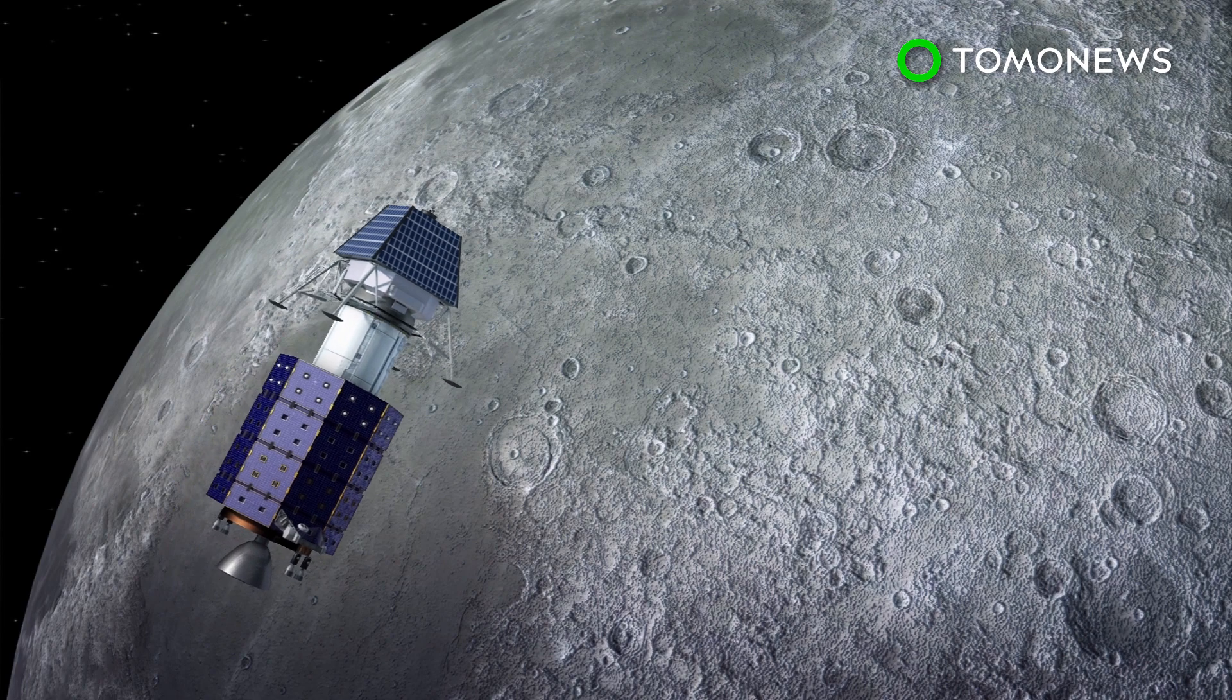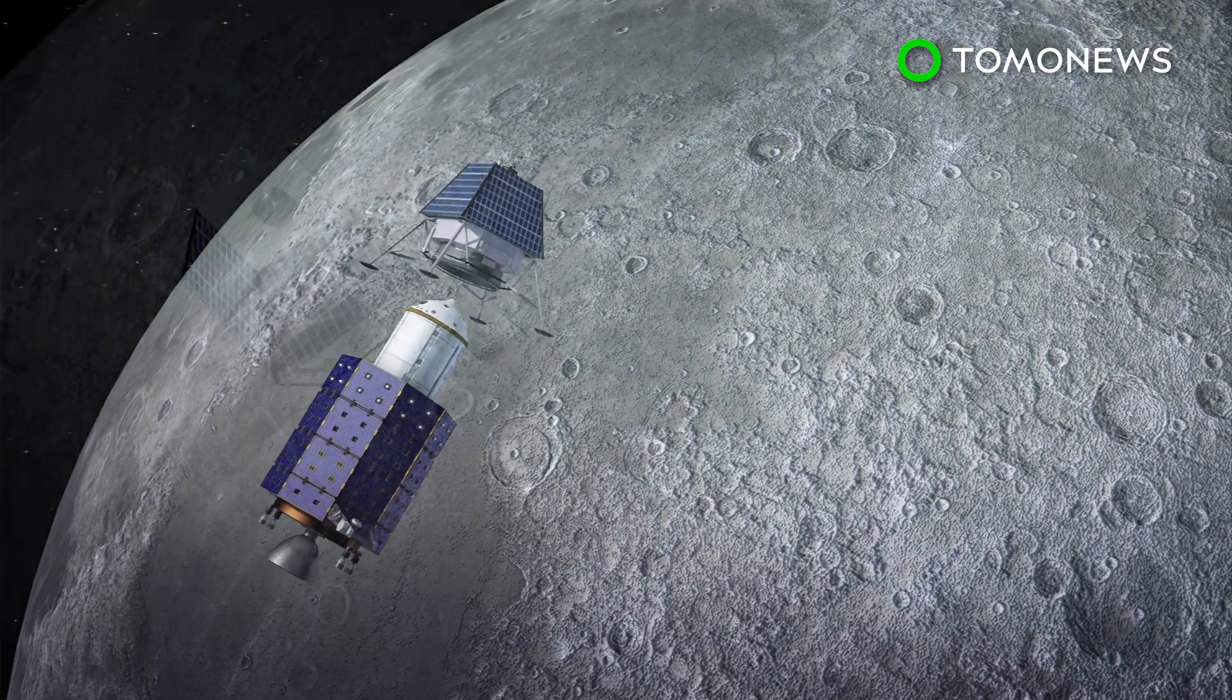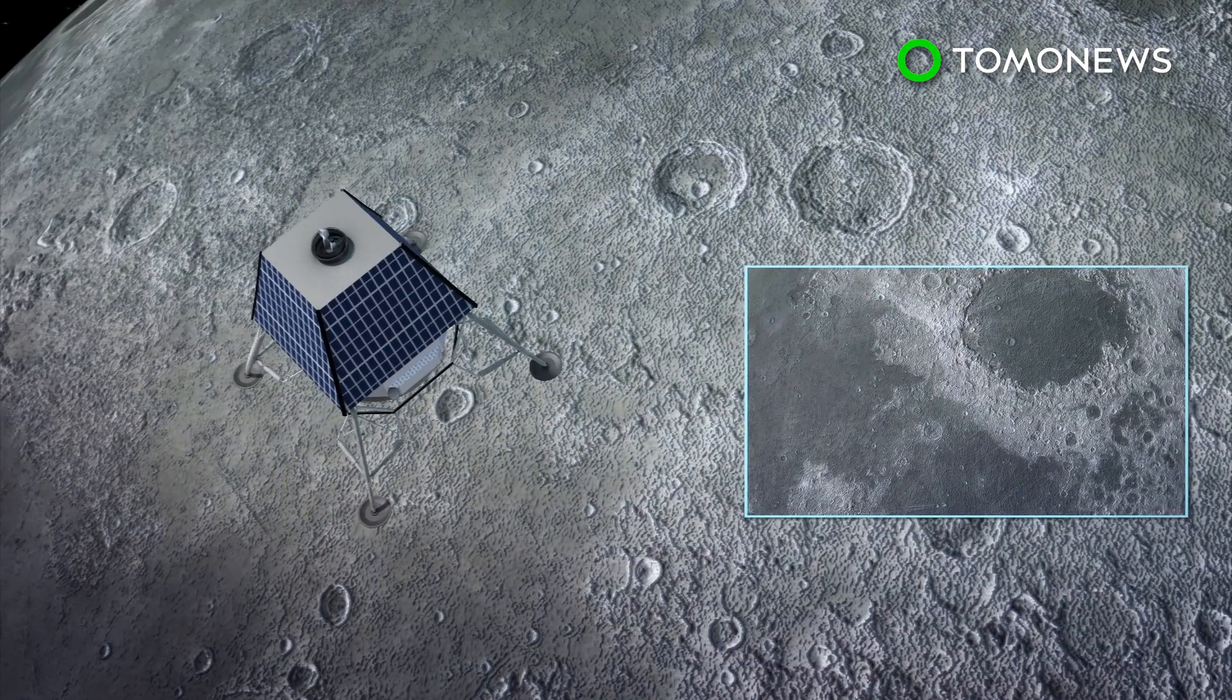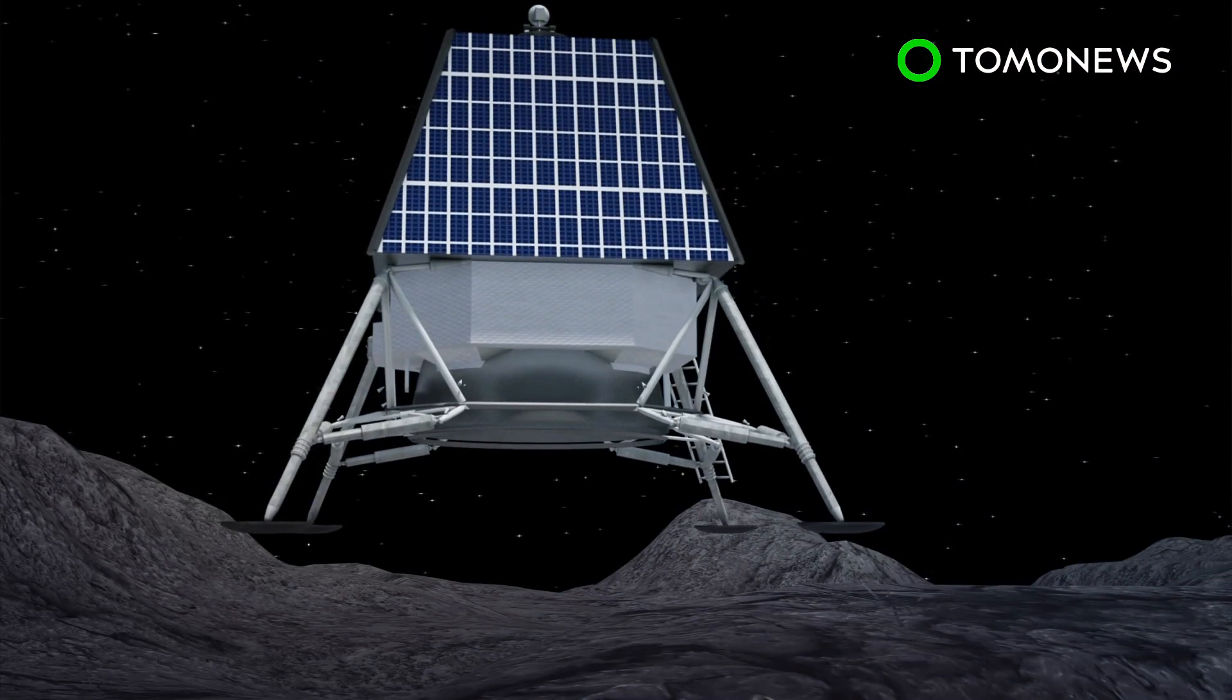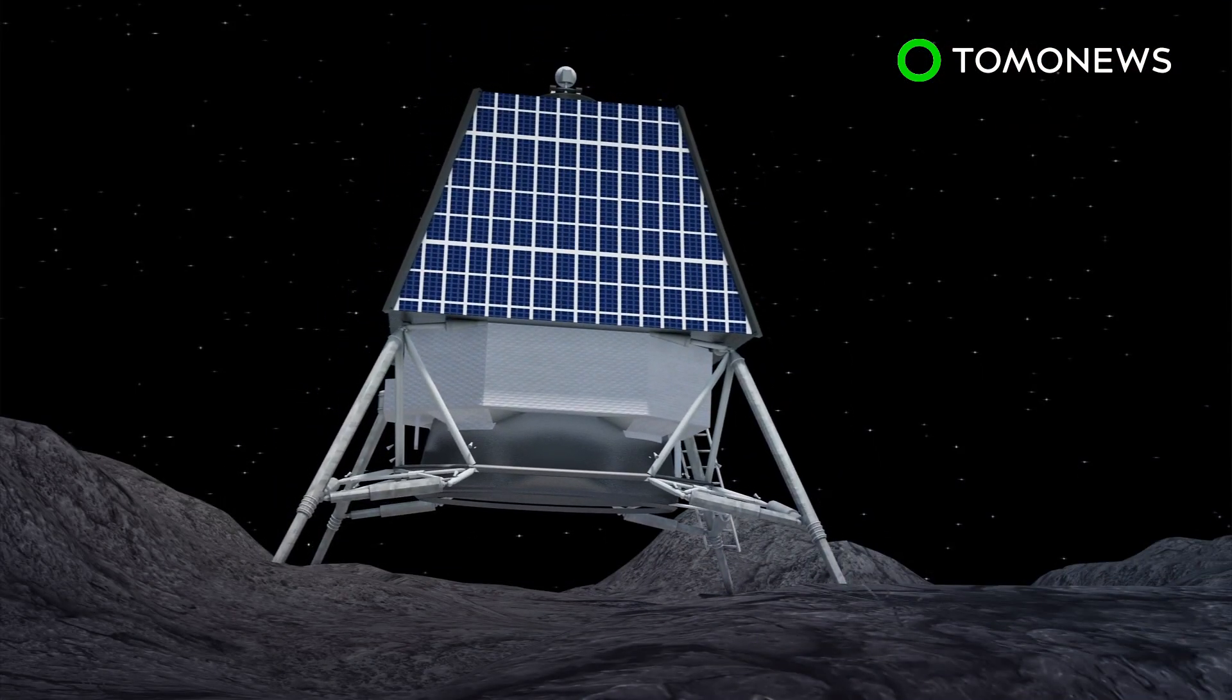The orbiter and the lander will separate once the spacecraft has reached the moon's orbit. The lander will attempt a soft landing between two lunar craters, Manzanus-C and Sempelius-N, according to ISRO.